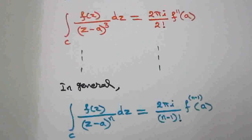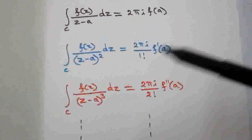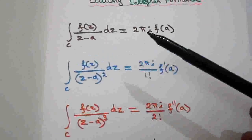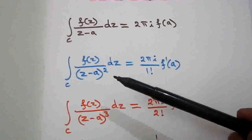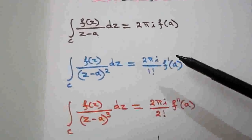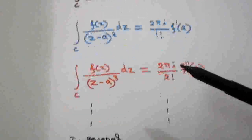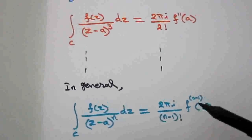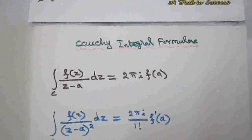In summary, these are all Cauchy integral formulas for derivatives. If the denominator power is 1: 0 factorial, 0th derivative. If power is 2: 1 factorial, 1st derivative. Power 3: 2 factorial, 2nd derivative. In general, if the power in the denominator is n: (n-1) factorial and (n-1)th derivative.